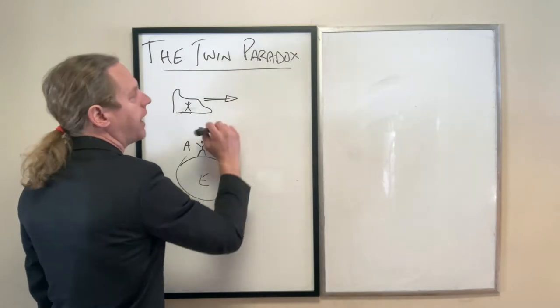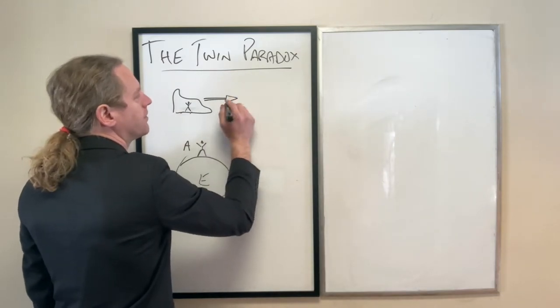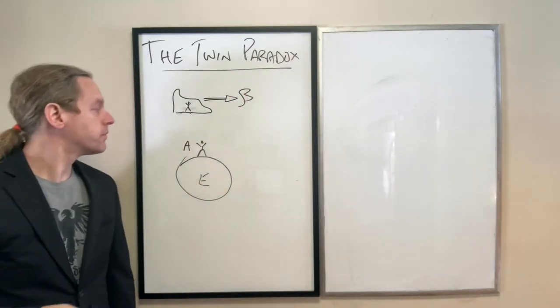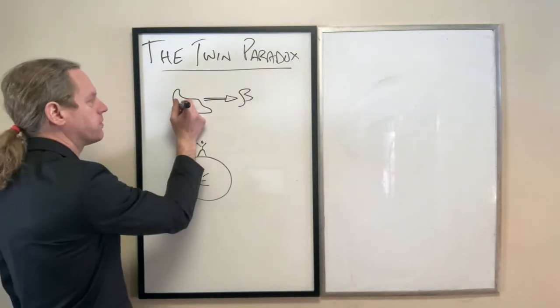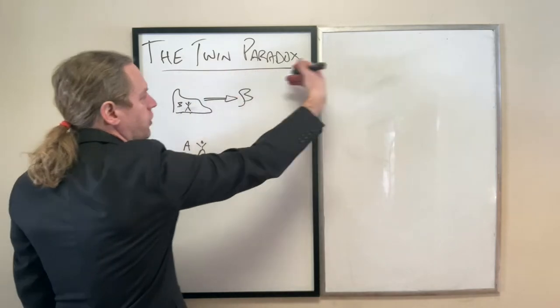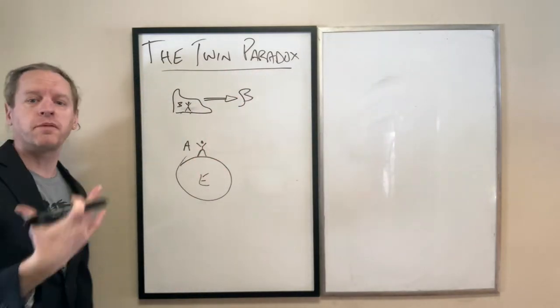So this person's going at some very high velocity, whatever beta happens to be, and 80 years on our watch go by, this is person B again, 80 years on our watch go by, this person comes back, so we're celebrating our 90th birthday.